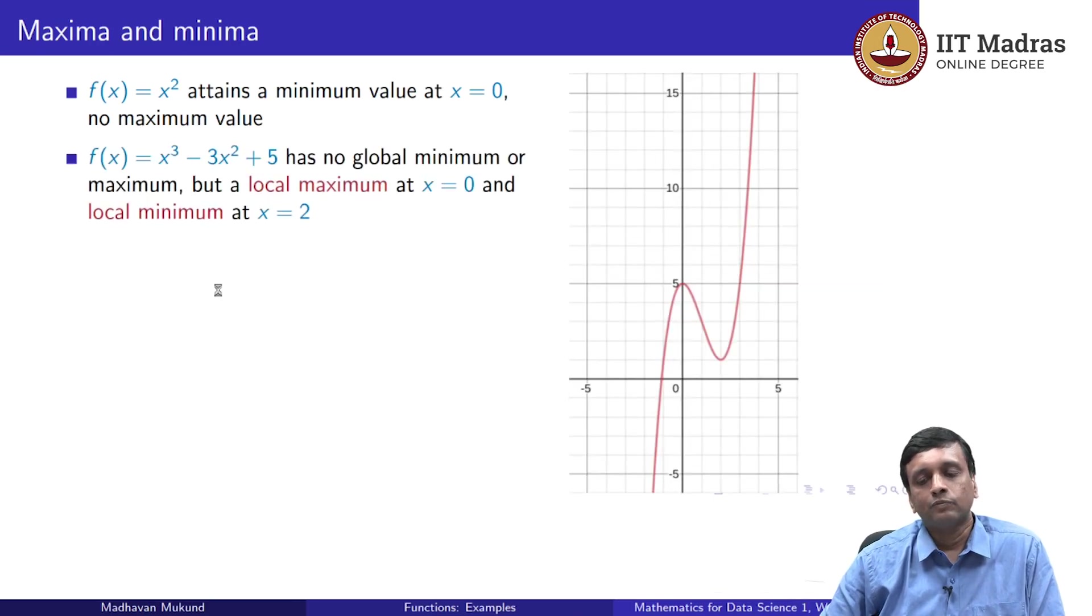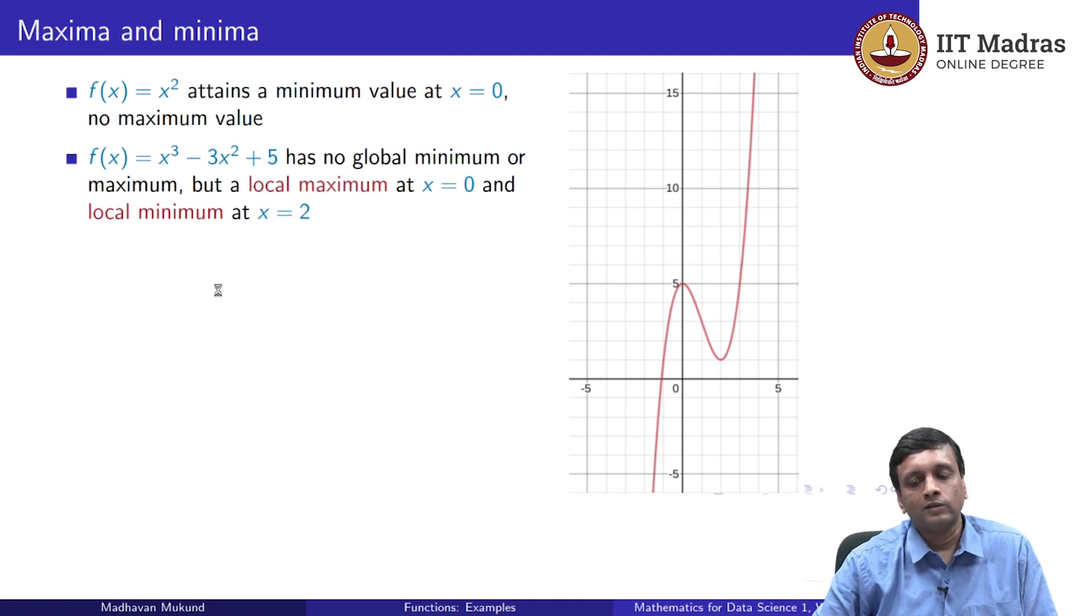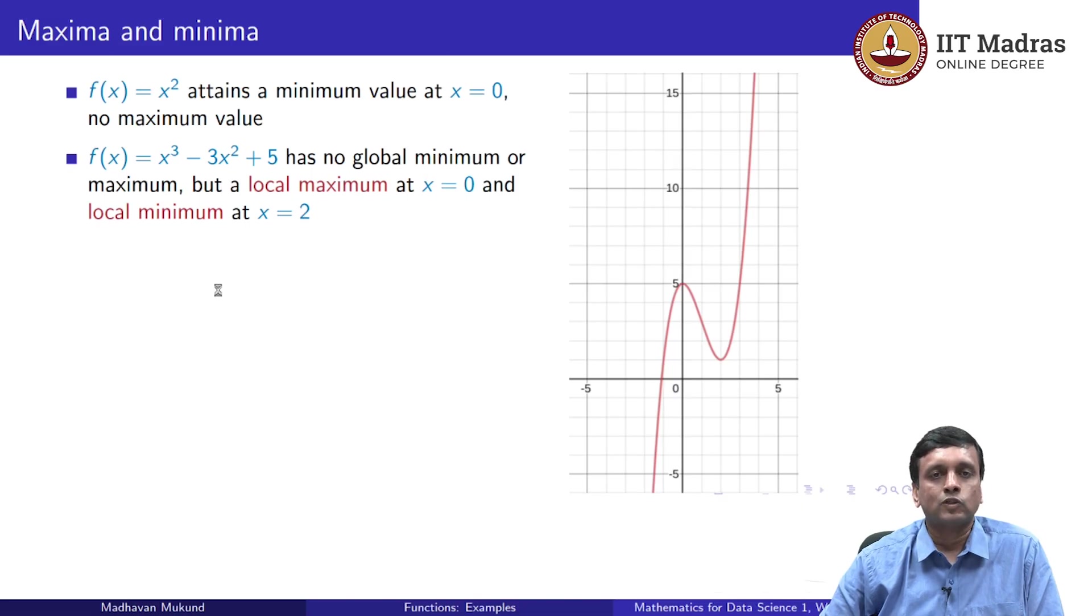Now, the cubic function we said grows arbitrarily small as we go to negative inputs and arbitrarily large. So there is actually no maximum and minimum. But it has an interesting behavior in between because it zigzags, it goes up, comes down and goes up again. So there is something called a local maximum and a local minimum. So at x = 0, it turns around. So it achieves a maximum value and starts falling briefly. And then at x = 2, it turns around again. So it achieves a local minimum and goes up again.